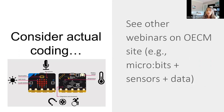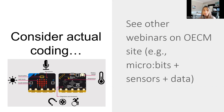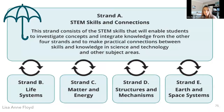Another way to help students become aware of emerging technology is to let them do some coding themselves. There are several archived webinars on the OECM website where we collected data with micro:bits — being aware of how sensors collect large amounts of data that can then be analyzed could itself be considered an emerging technology. Hopefully I've provided ideas for how to integrate Strand A into all other strands.